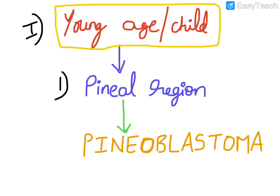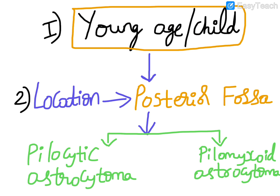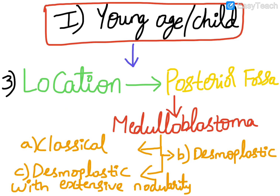In the pineal region, the most common CNS tumor to arise in the pediatric age group is pineoblastoma. Moving on to the second location in the pediatric age group, that is the posterior fossa. In the posterior fossa, the most common CNS tumors include pilocytic astrocytoma and pilomyxoid astrocytoma.